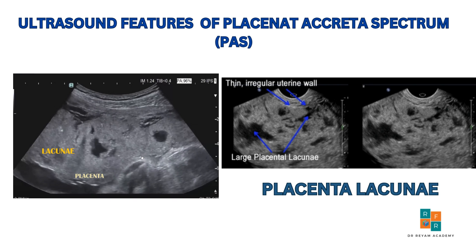There are several sonographic features that help diagnose placenta previa accreta. The first feature is placenta lacunae. Placenta lacunae appear as sonolucent, dark fluid-filled spaces within the placenta. They often give a moth-eaten appearance on ultrasound. These spaces are an important indicator of placenta accreta spectrum, especially when they are large, irregular, and show turbulent blood flow. Lacunae are more commonly associated with placenta accreta spectrum.